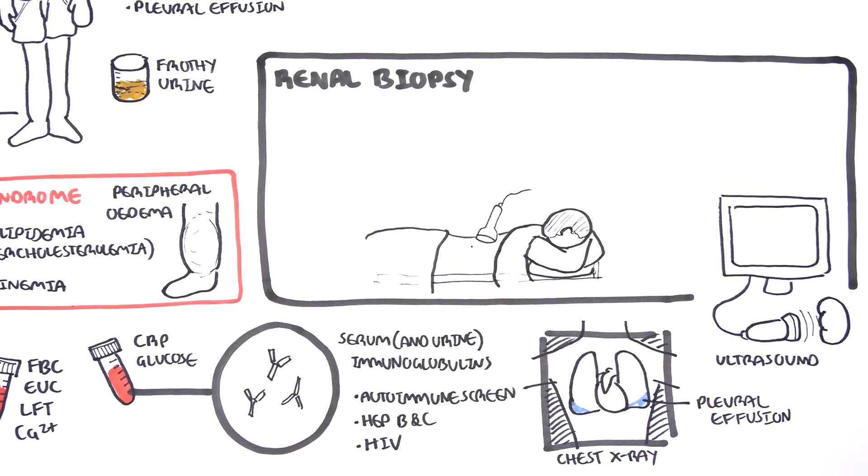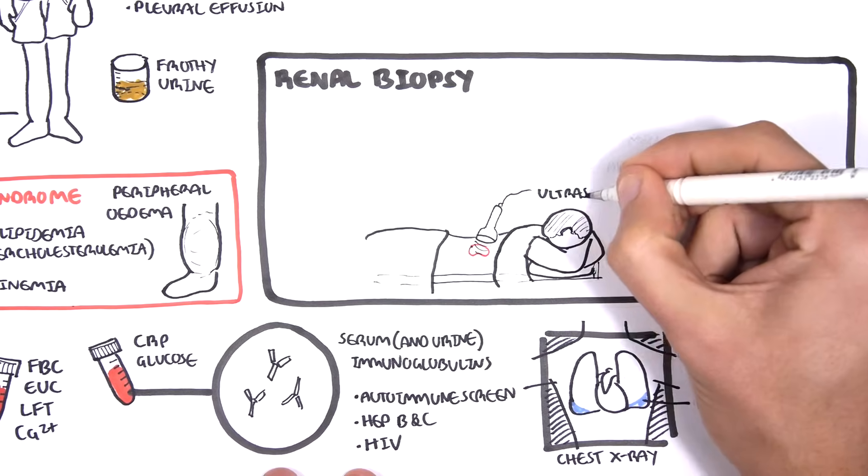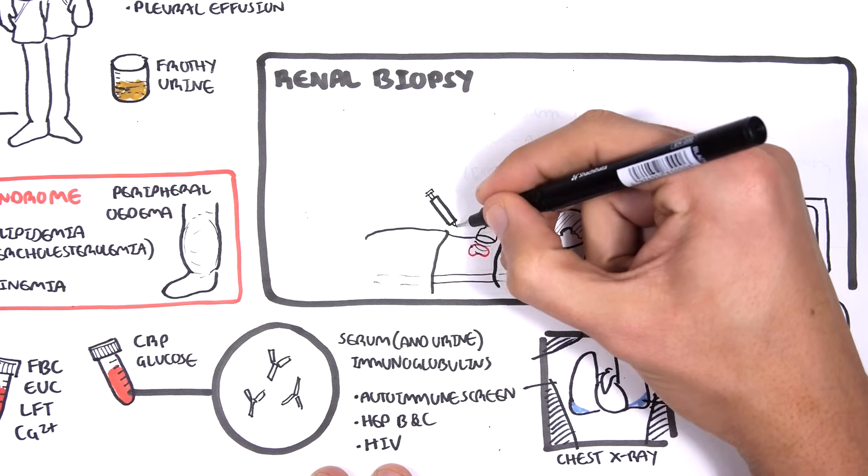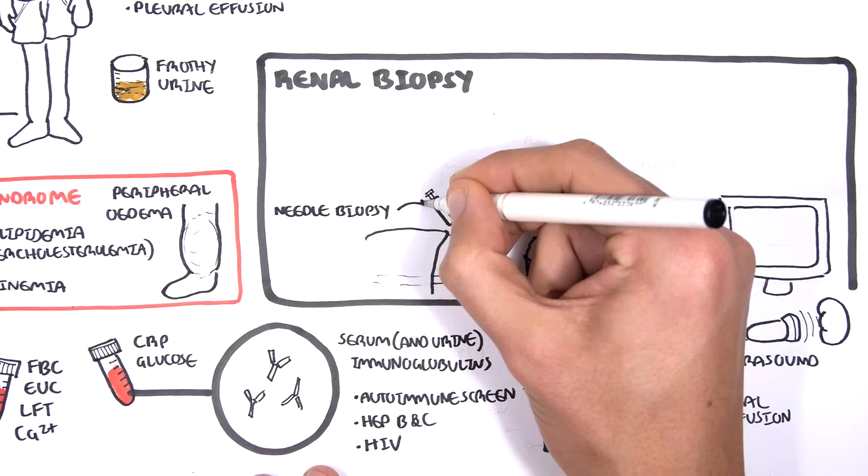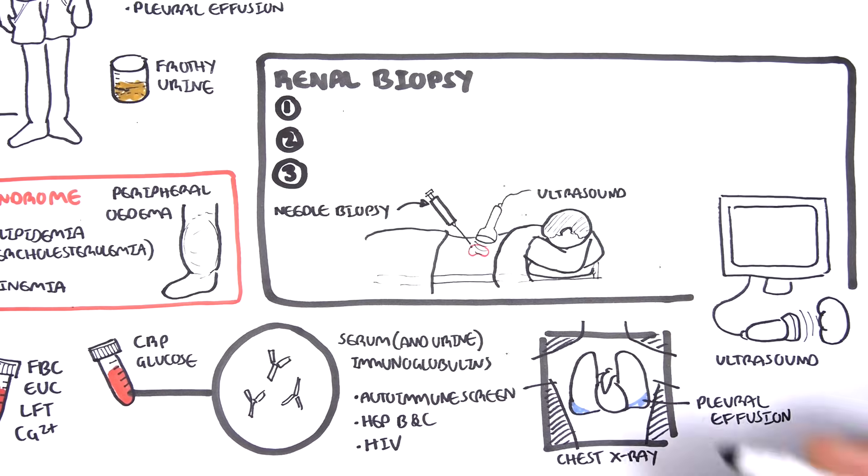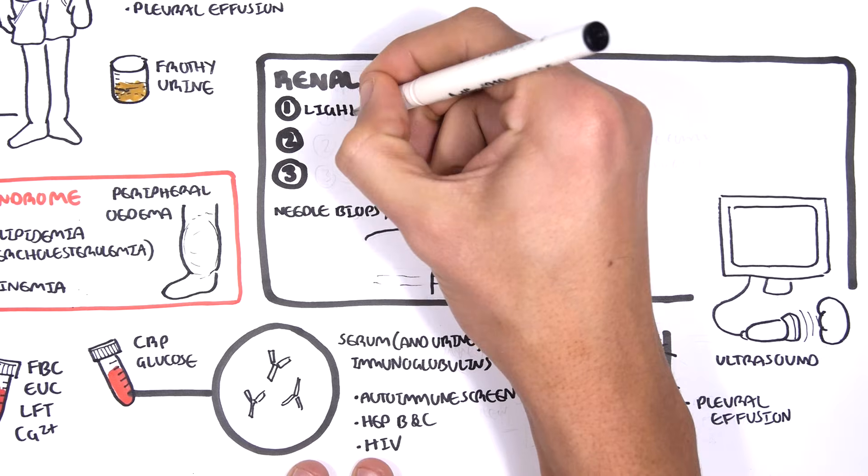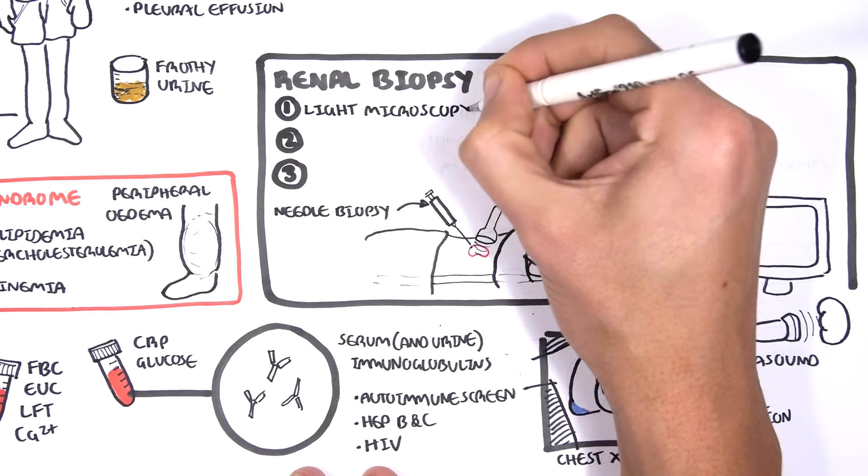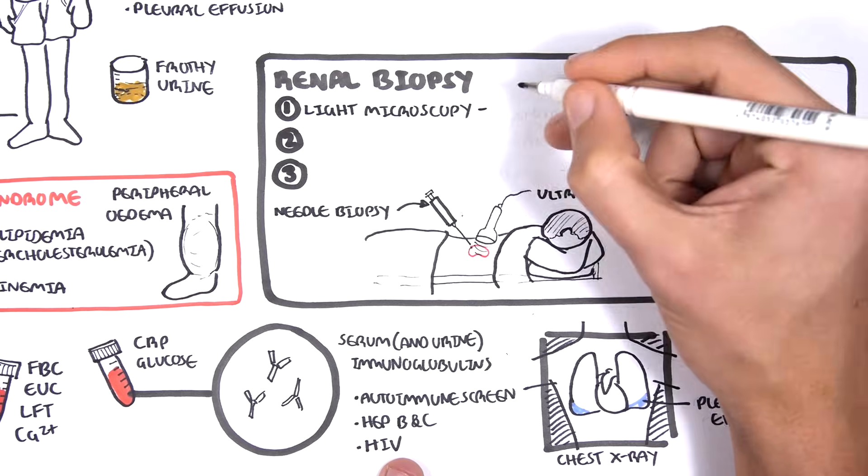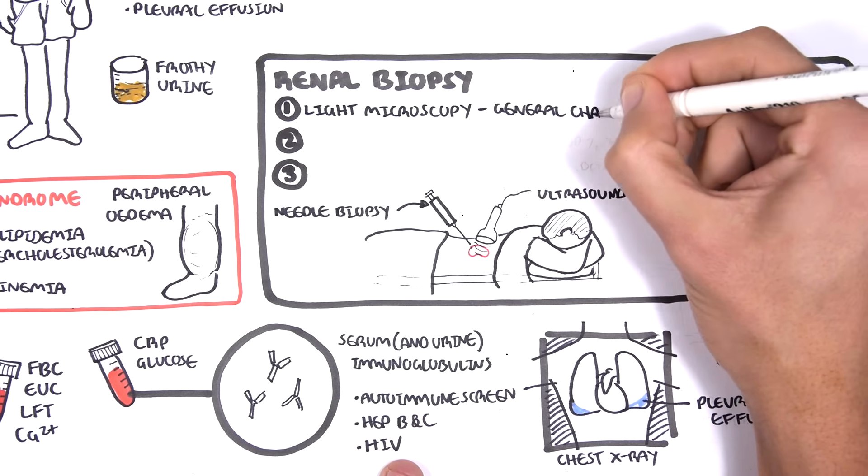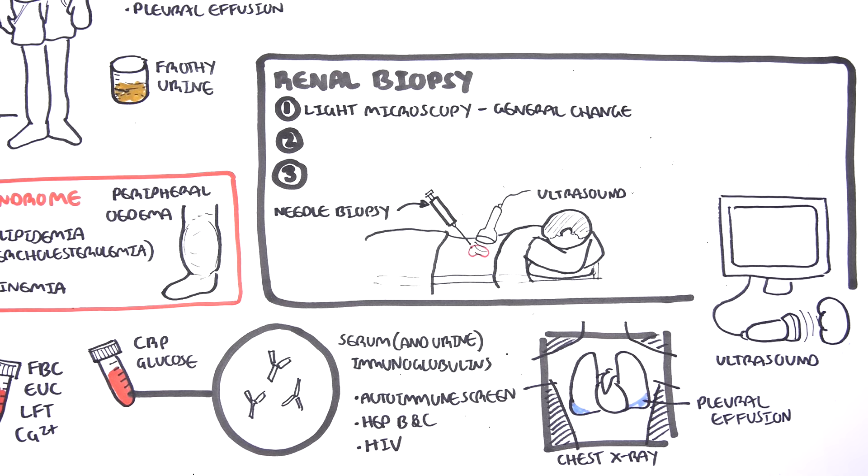Renal biopsy is important to look at the macro and micro changes in glomerular nephritis and to distinguish between different types of nephrotic syndrome. In renal biopsy, you take a sample of the kidney tissue, usually ultrasound-guided. Three things are checked. First, light microscopy, which looks at the general change in the kidney tissue, particularly the head of the nephron where the glomerulus is.